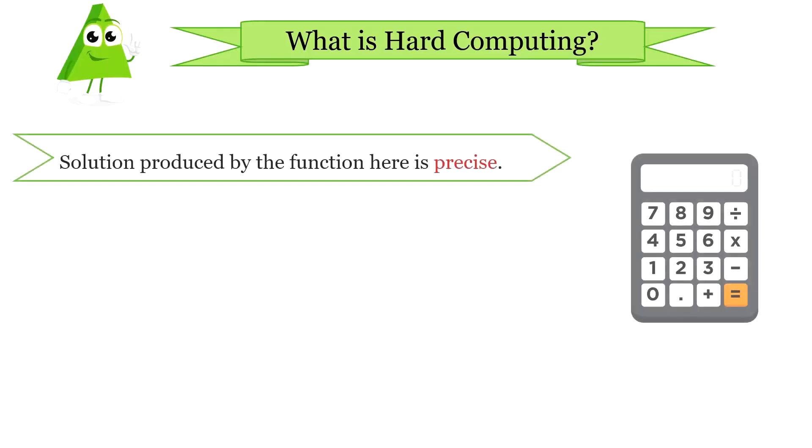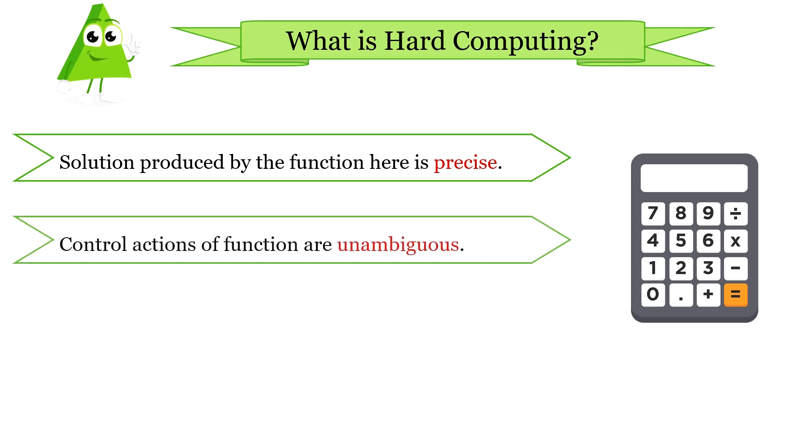Hard computing always produces a precise solution. That means for 2 plus 2 it will precisely deliver 4. Next, control actions of hard computing functions are unambiguous.